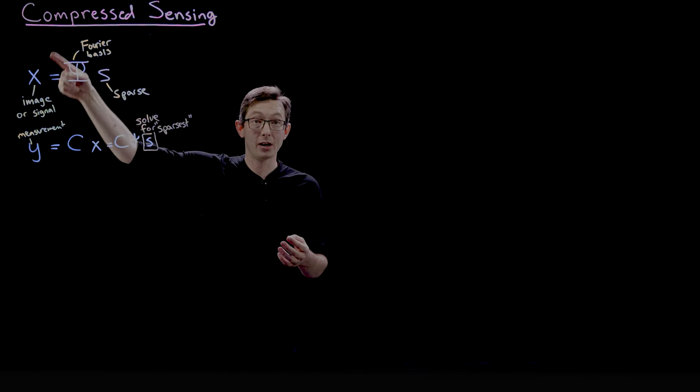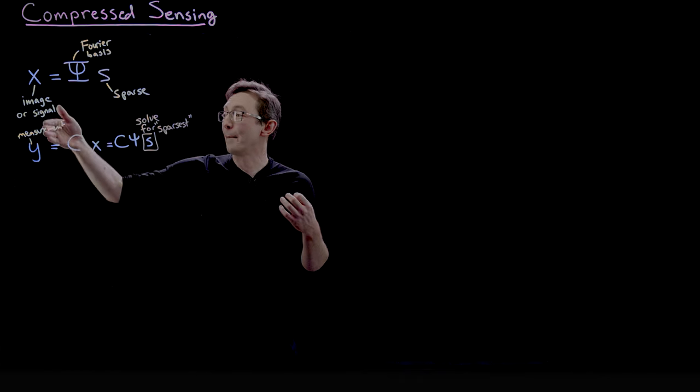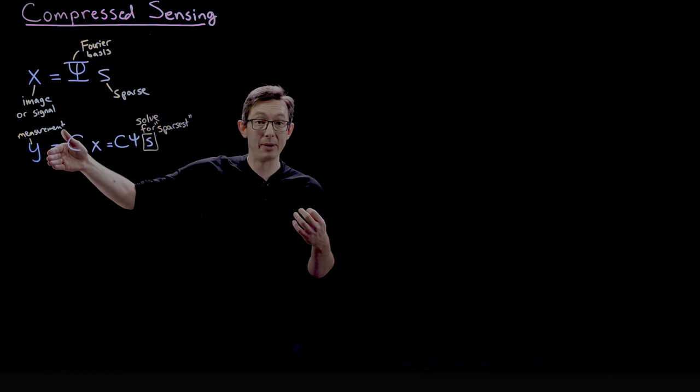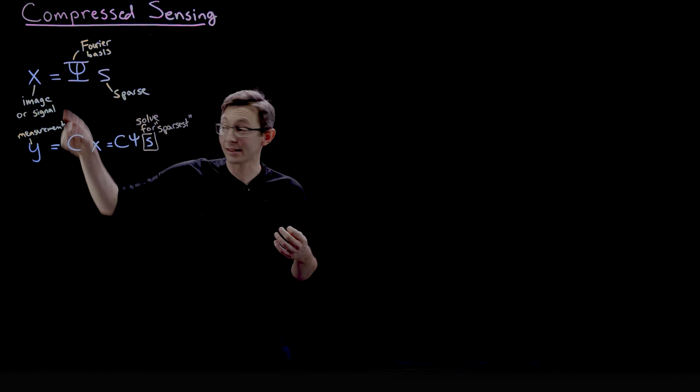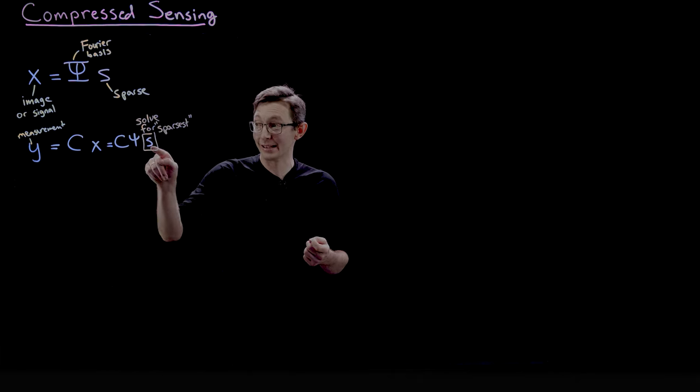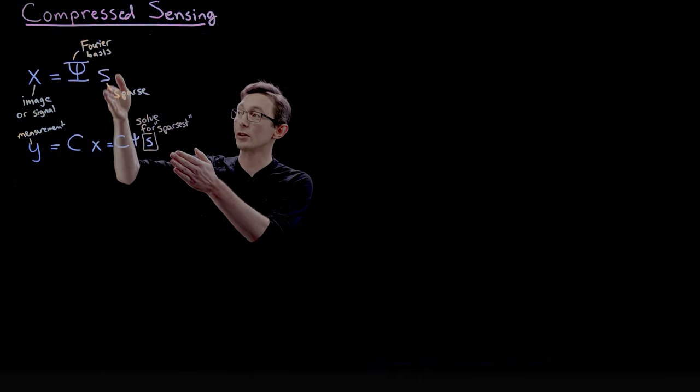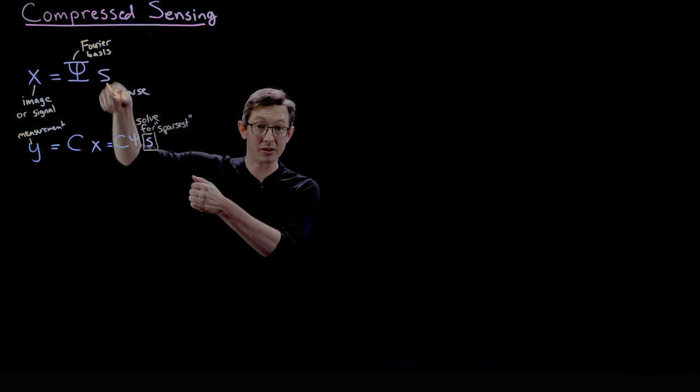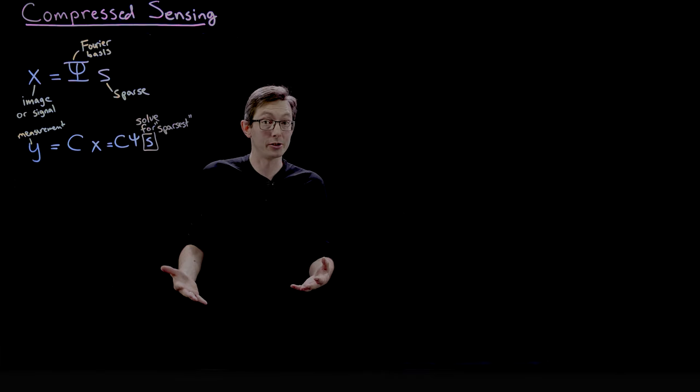So let's say that X is an image which is sparse in Fourier space. You can get away with measuring a massive sub-sampling of the pixels in X, maybe only 10 or 20% of the pixels, and you can infer what the sparsest vector S that satisfies this measurement equation is. And once you solve for that sparse vector S, the sparse vector of Fourier coefficients, you can inverse Fourier transform and reconstruct your full image.